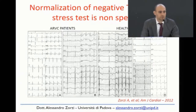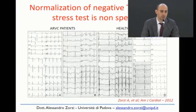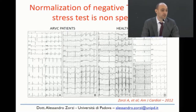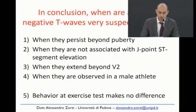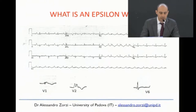Many believe that normalization of inverted T-waves during a stress test is reassuring — it actually makes no difference. Both in ARVC patients and in normal individuals, T-waves can persist or normalize during exercise testing. This is not informative in the field of ARVC. In conclusion, anterior negative T-waves are very suspicious for ARVC when they persist beyond puberty, are not associated with J-point elevation, extend beyond V2, and are observed in a male athlete.